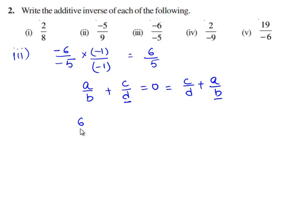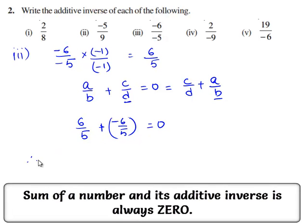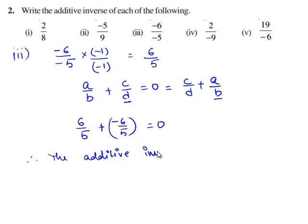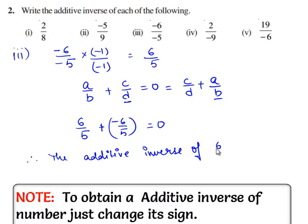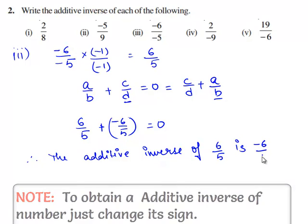Therefore the additive inverse of 6 by 5 is minus 6 by 5 because 6 by 5 plus minus 6 by 5 gives 0. Therefore the additive inverse of 6 by 5 is minus 6 by 5.